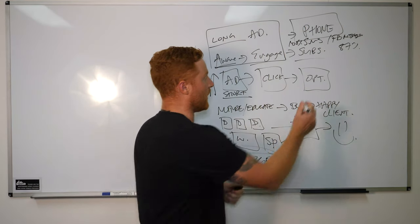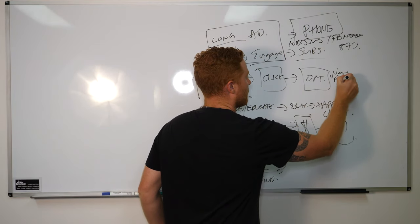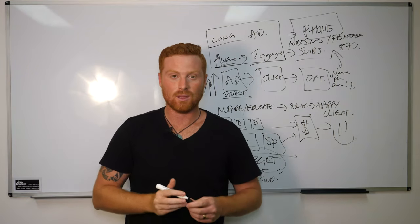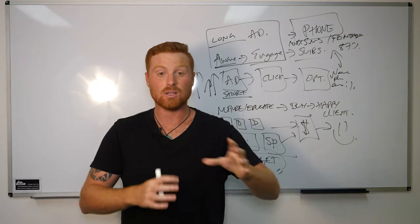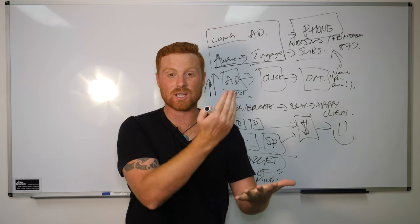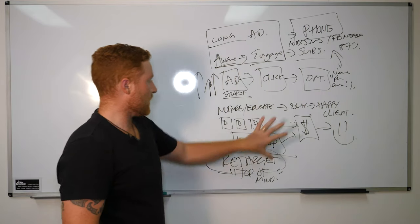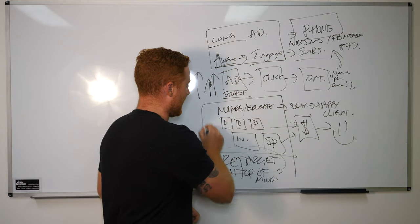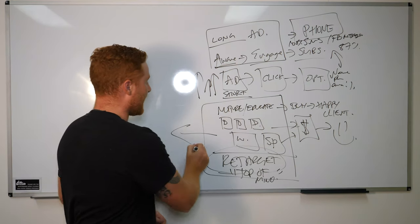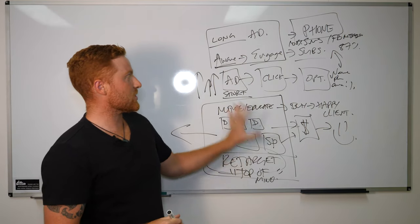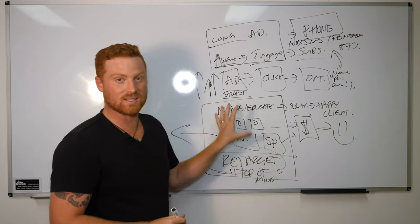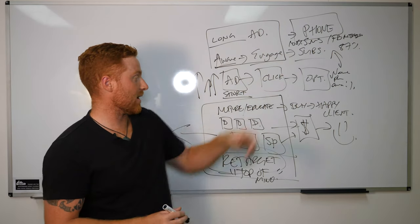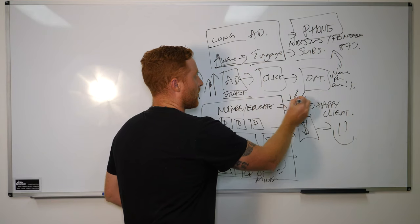Instead of opting in the old way with name, phone, and email, now we're getting people to opt in just for phone. We get their phone or we get Messenger, so they opt in there and then it shows up right on their phone. So that's where it goes. Then this here, this bit here is actually taken right out. This nurture and educate no longer fits in our funnel.